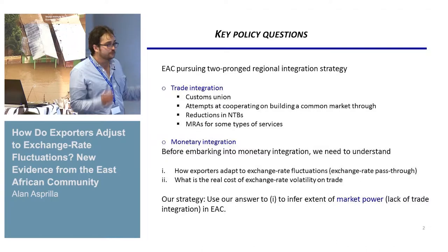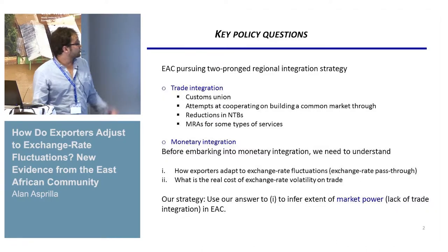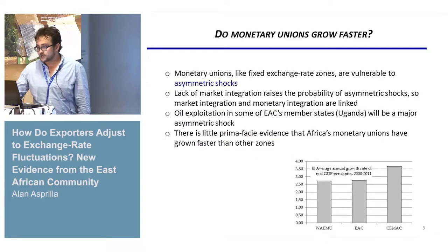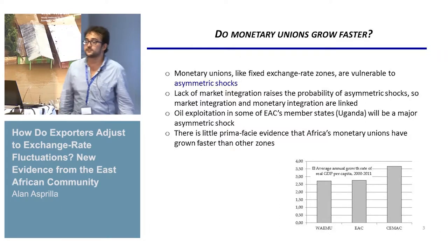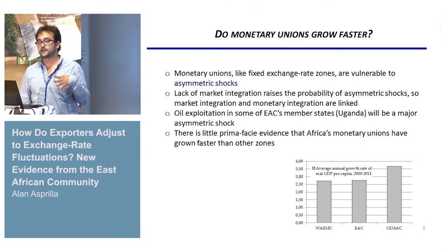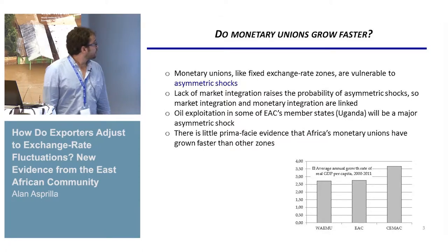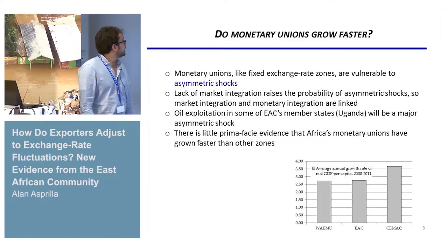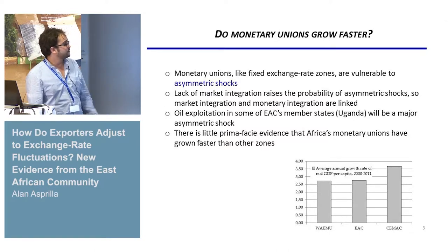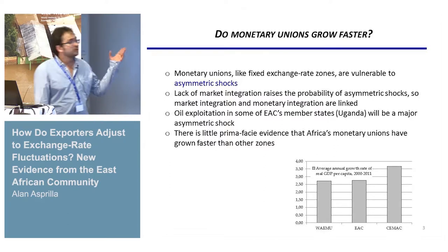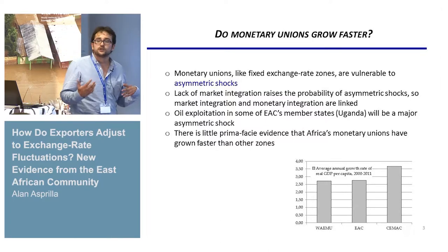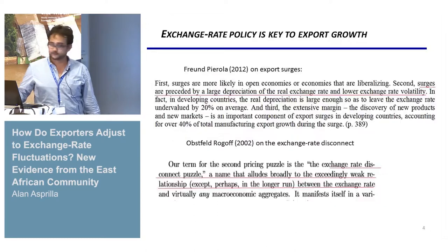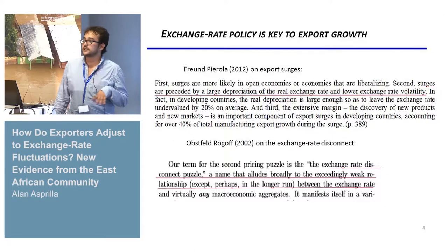We also look at the real cost of exchange rate volatility on trade, and infer the extent of market power and lack of market integration in the EAC. Monetary unions with fixed exchange rates are vulnerable to asymmetric shocks, and lack of market integration raises the probability of such shocks. For example, oil exploration in Uganda is a potential asymmetric shock. So far there is no clear evidence of more growth within a monetary union compared to a customs union.